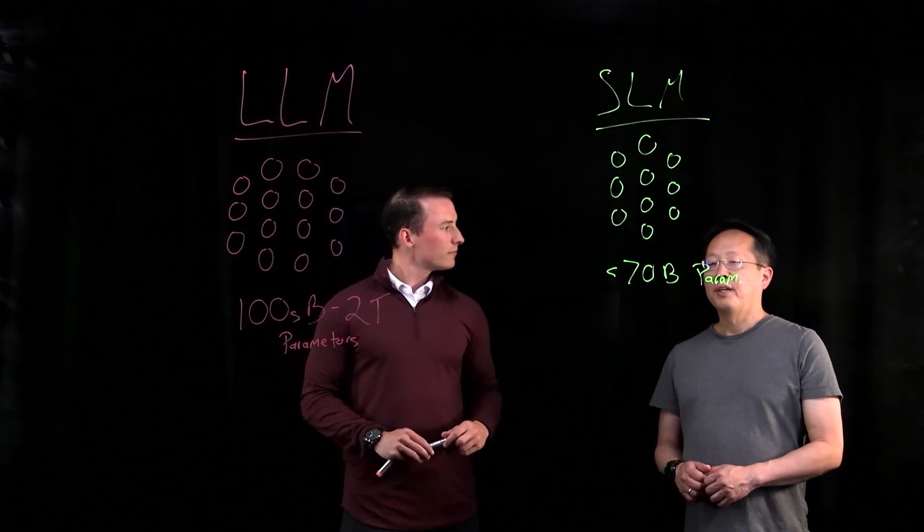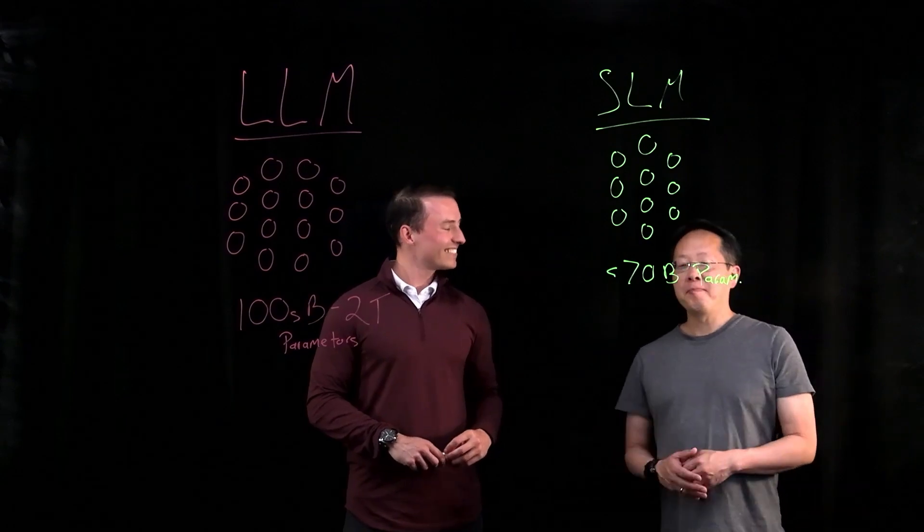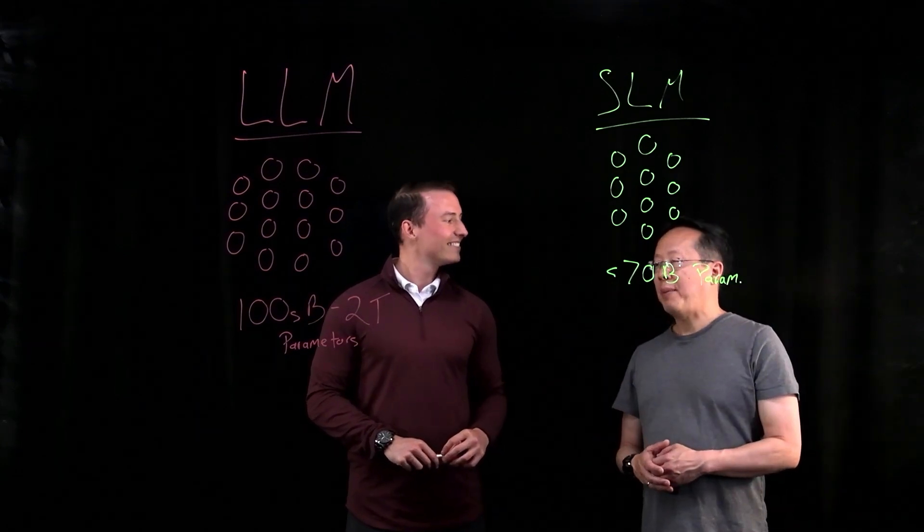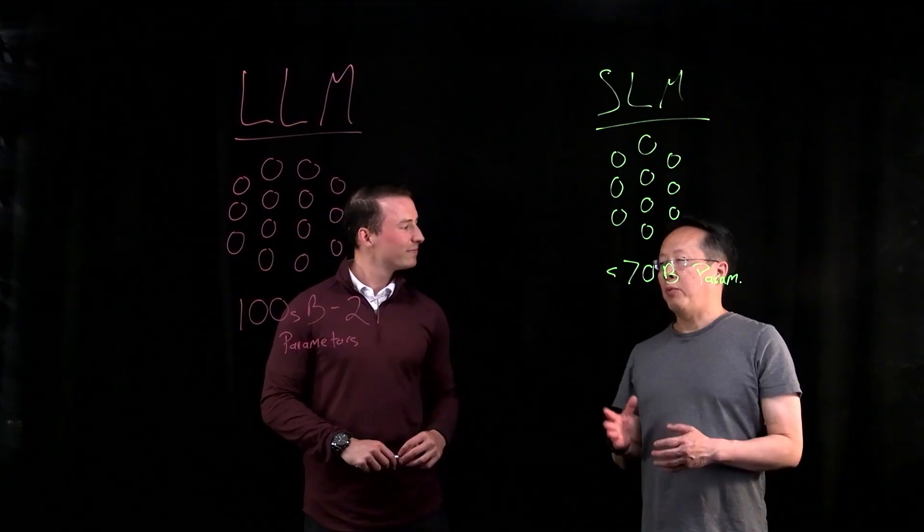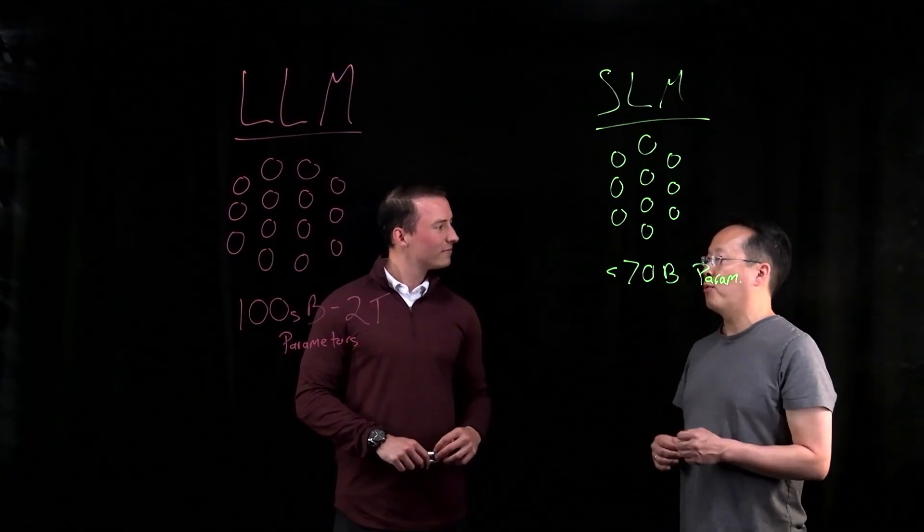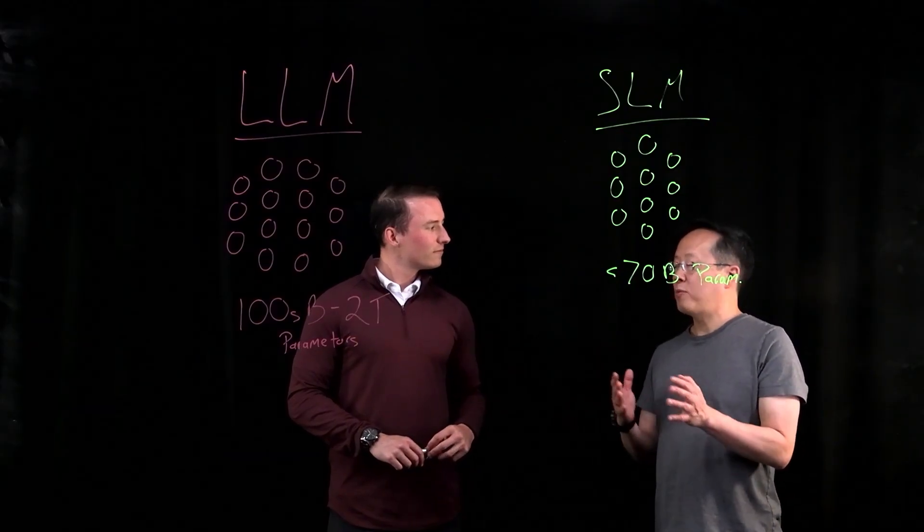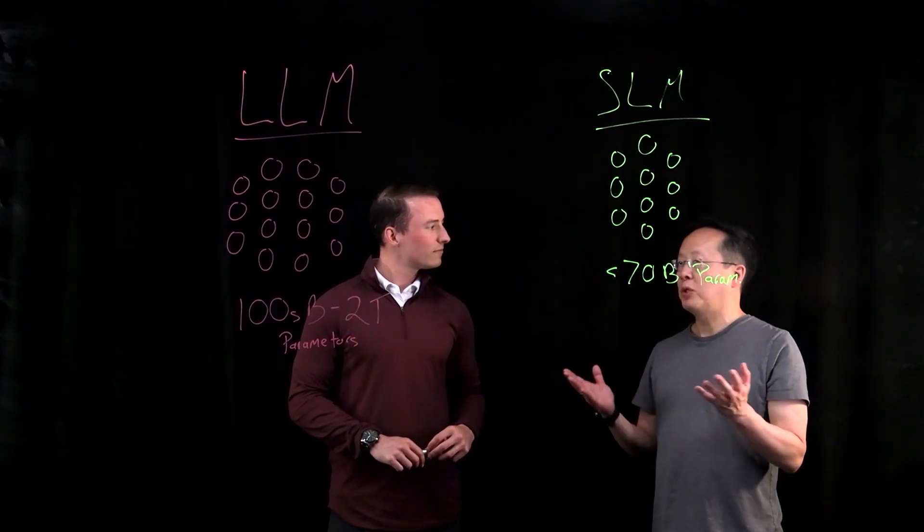Got it. So even though a billion is normally a very large number, an SLM typically has less than 70 billion parameters. But we hear so much about how important parameters are. Can you talk a little bit more about these things called parameters and how the number of them translates into real-world use cases?